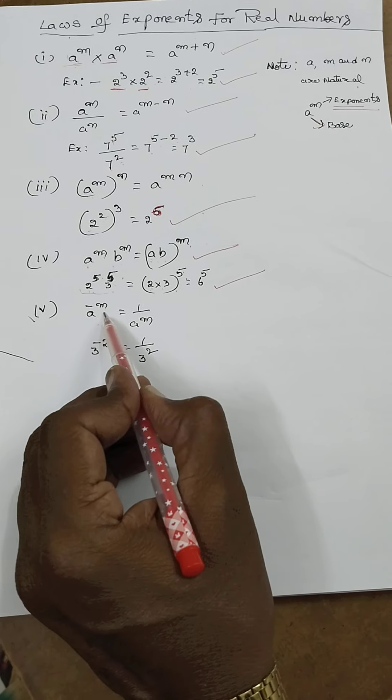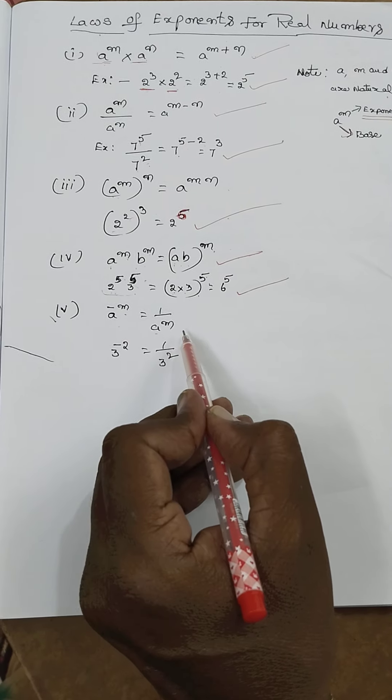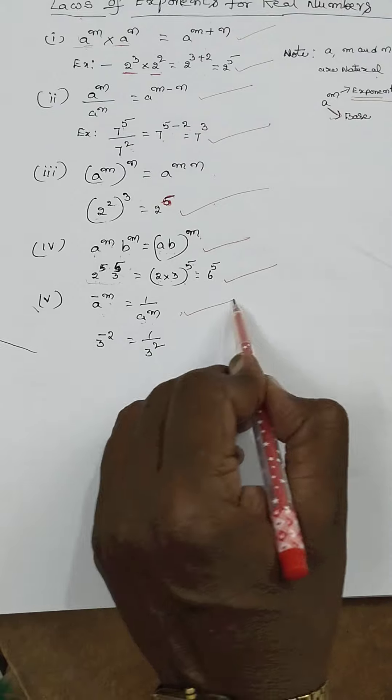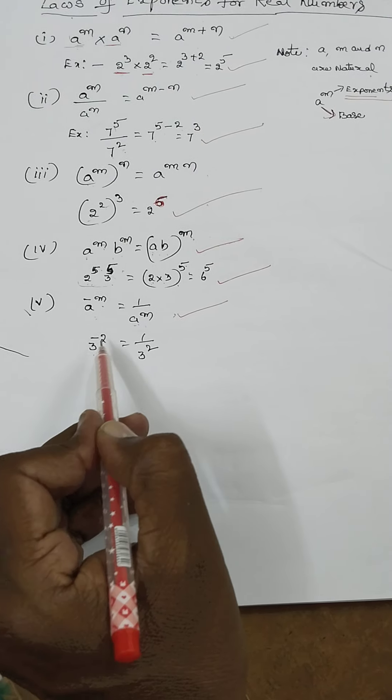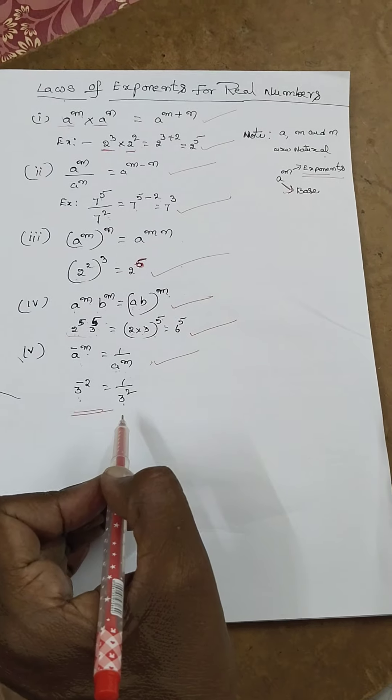So a^(-m), you can write 1/a^m. a^(-m) = 1/a^m. For example, 3^(-2) = 1/3^2. So these are the laws of exponents.